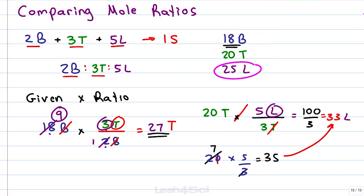If we used up all of the turkey, we would require 33 pieces of lettuce which we don't have and that means lettuce is our limiting reactant or limiting reagent.